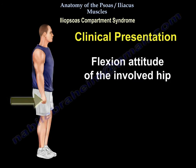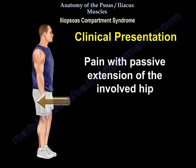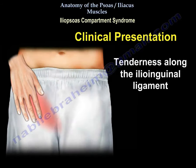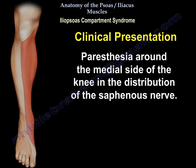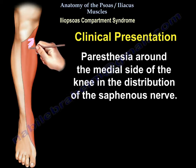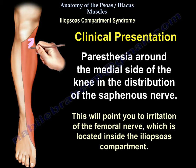Clinical presentation includes flexion attitude of the involved hip and pain with passive extension of the involved hip. Paresthesia around the medial side of the knee in the distribution of the saphenous nerve is a very important finding, as it points to irritation of the femoral nerve which is inside the iliopsoas compartment.